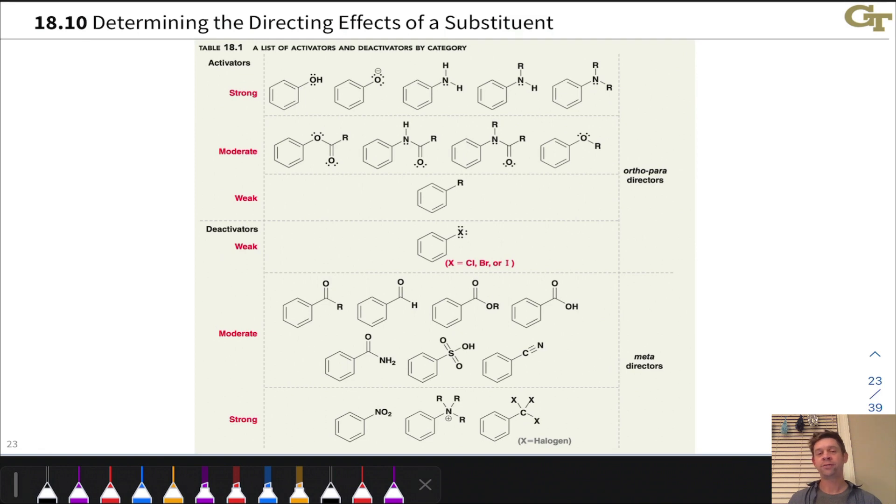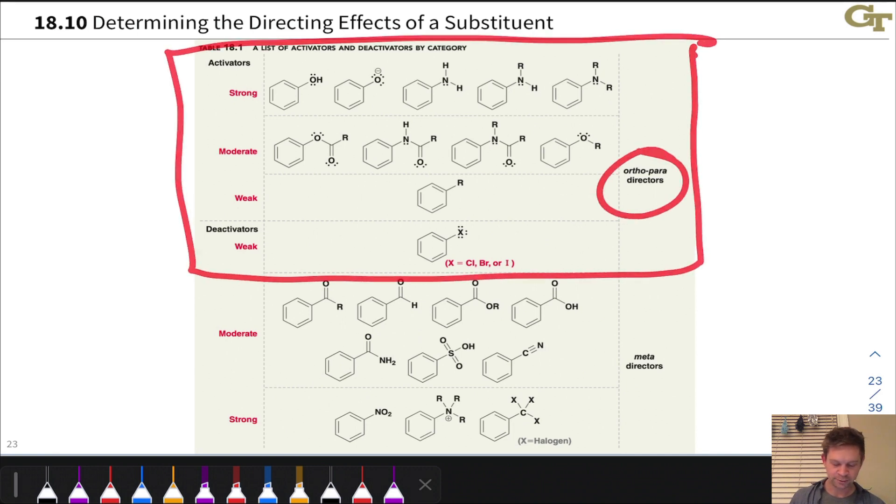This table surveys activating and deactivating groups and their directing effects, and it comes from the Klein third edition textbook, table 18.1. Notice that all of these that are activators are ortho-para directors.